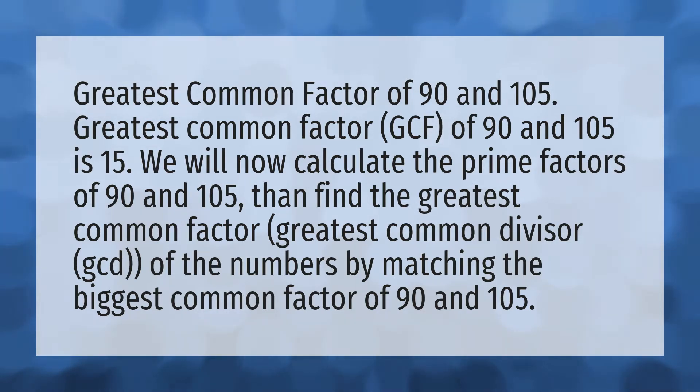We will now calculate the prime factors of 90 and 105, then find the greatest common factor (greatest common divisor, GCD) of the numbers by matching the biggest common factor of 90 and 105.